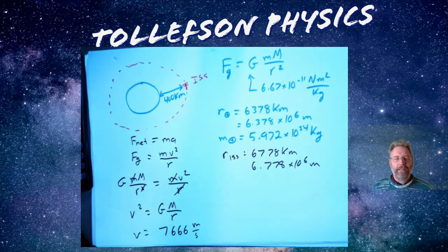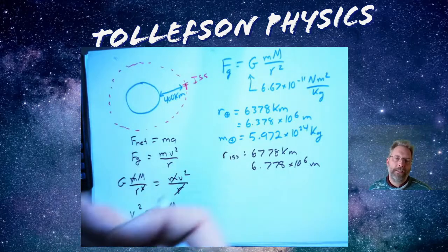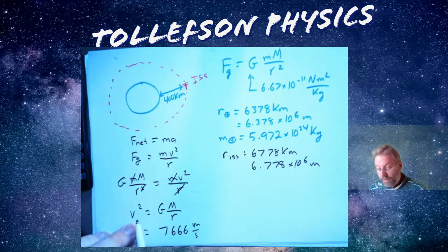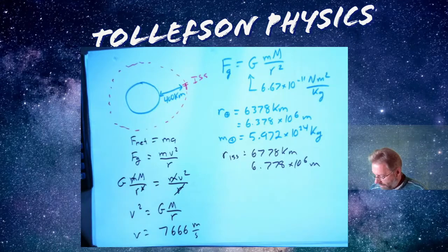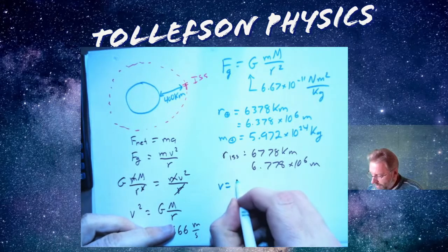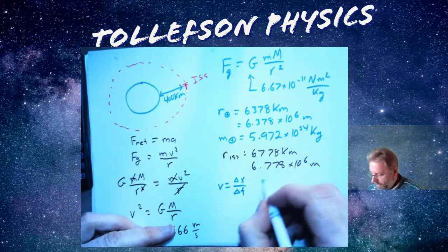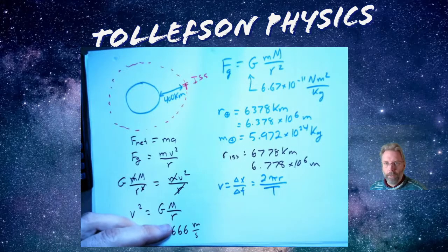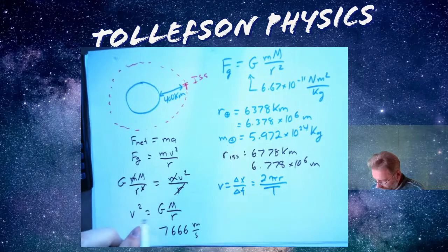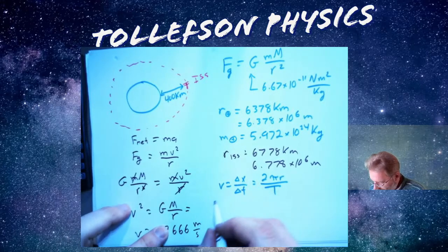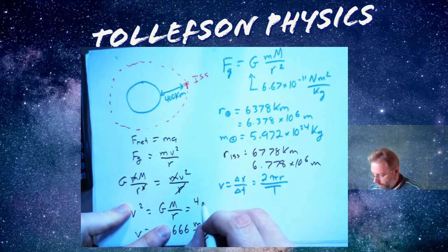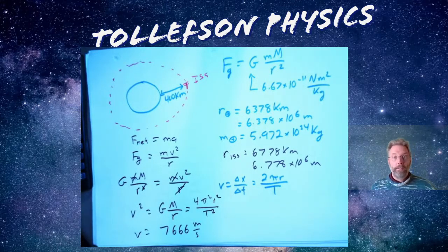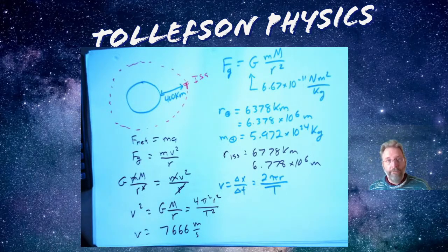What about the period? I want to know how long it takes to go around. What I also know is velocity is change in distance divided by change in time. We're talking about a circular distance, which is the circumference. And I want to know the period. So what I could do is I can substitute this in and solve a different way. If I square that, 2 squared is 4, pi squared, r squared over t squared. And so now I'm going to use this. I'm going to simplify and solve for t.